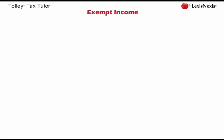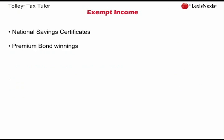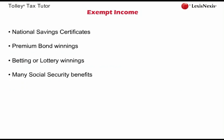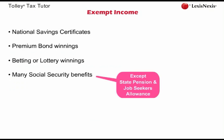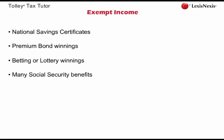There are a few sources of income which are specifically exempt from income tax. Income from national savings certificates is exempt from tax, as are any winnings on premium bonds. As a general principle, any income from betting, gaming, or lotteries is exempt from income tax. Many social security benefits are also exempt — for example, housing benefit and winter fuel allowances for pensioners. The notable exceptions are the state pension and any jobseeker's allowances.